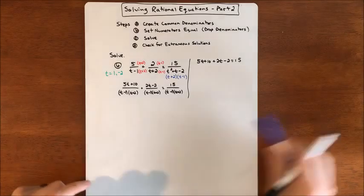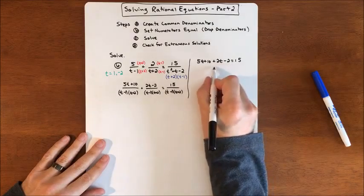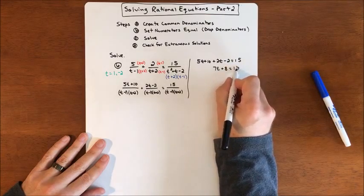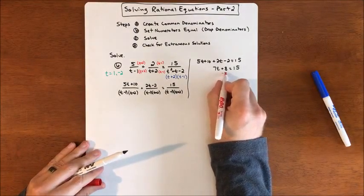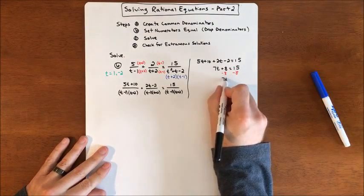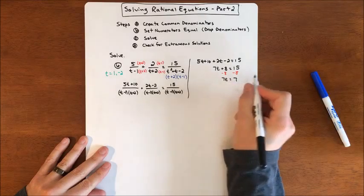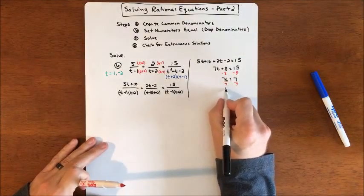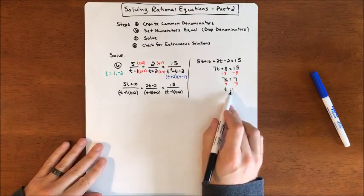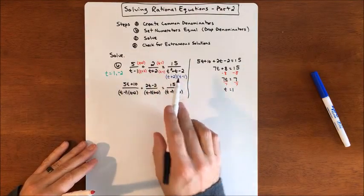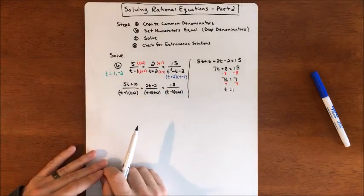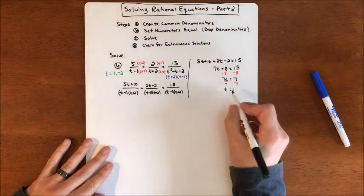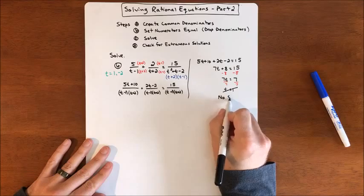That's really what we're trying to solve. Combining like terms: 5t and 2t make 7t, and 10 and negative 2 make 8, which equals 15. We'll subtract 8 from both sides, getting 7t equals 7. Divide both sides by seven, and that gives us t equals one. However, if you plug t equals one into the original, it's going to make one or more denominators zero — we can't divide by zero. So t equals one is one of our extraneous solutions and we have to kick that out. It was the only solution, so we have no solution.